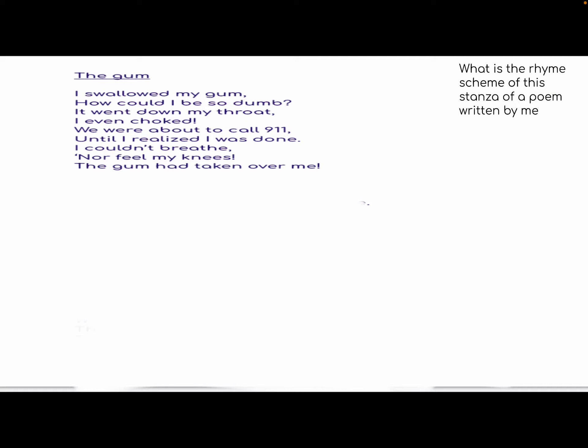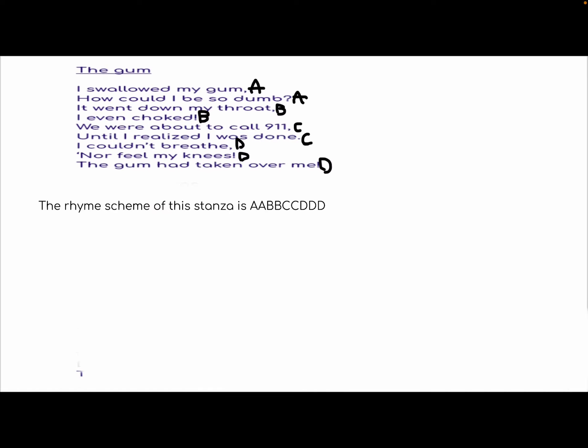The Gum. What is the rhyme scheme of this stanza of a poem written by me? I swallowed my gum. How could I be so dumb? It went down my throat. I even choked. We were about to call 911 until I realized I was done. I couldn't breathe, nor feel my knees. The gum had taken over me. Well, if you guessed A-A-B-B-C-C-D-D-D, you are correct.